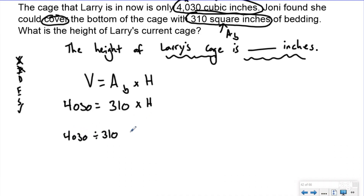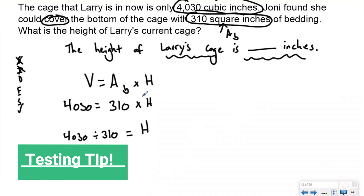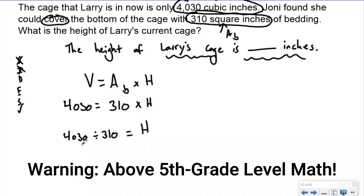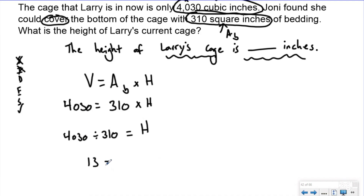Now that I've plugged my information in, I know this is a basic multiplication/division fact family question. If I'm looking for a missing factor, I need to rewrite this as division. I'm going to divide to solve for my missing height. So I have to do 4,030 divided by 310, and my height is going to be 13 inches — I had 13 layers of 310, which gave me the volume of 4,030. I go back and write that into my statement: the height of Larry's cage is 13 inches.